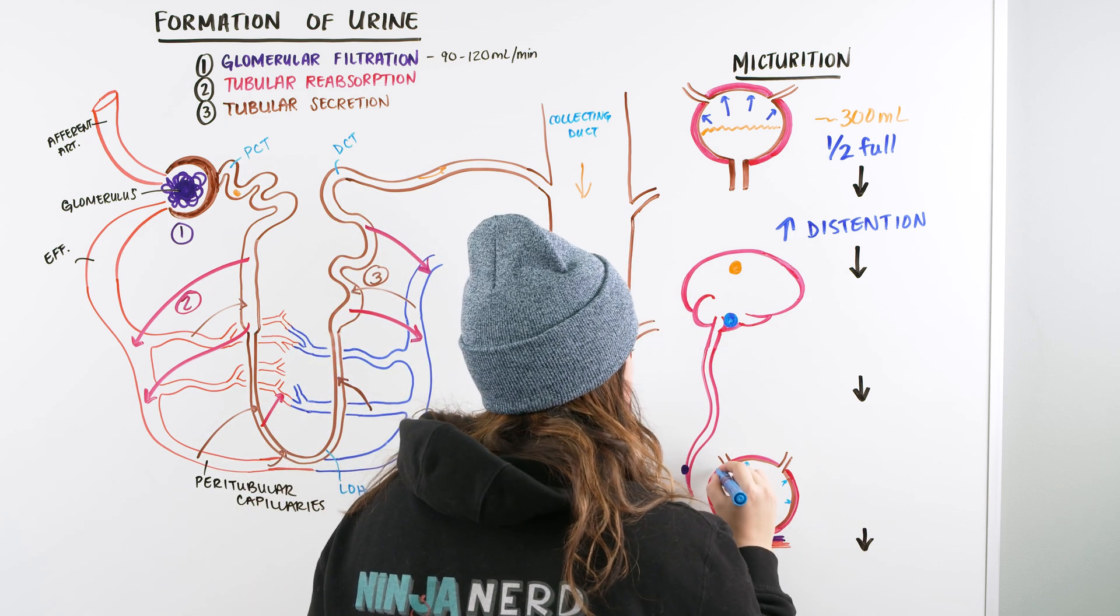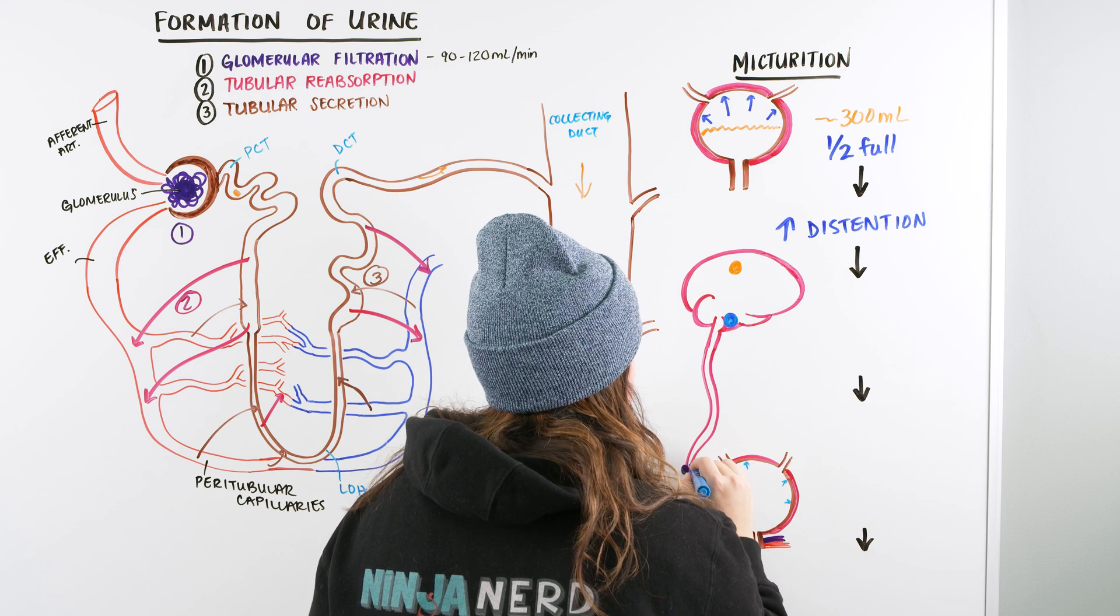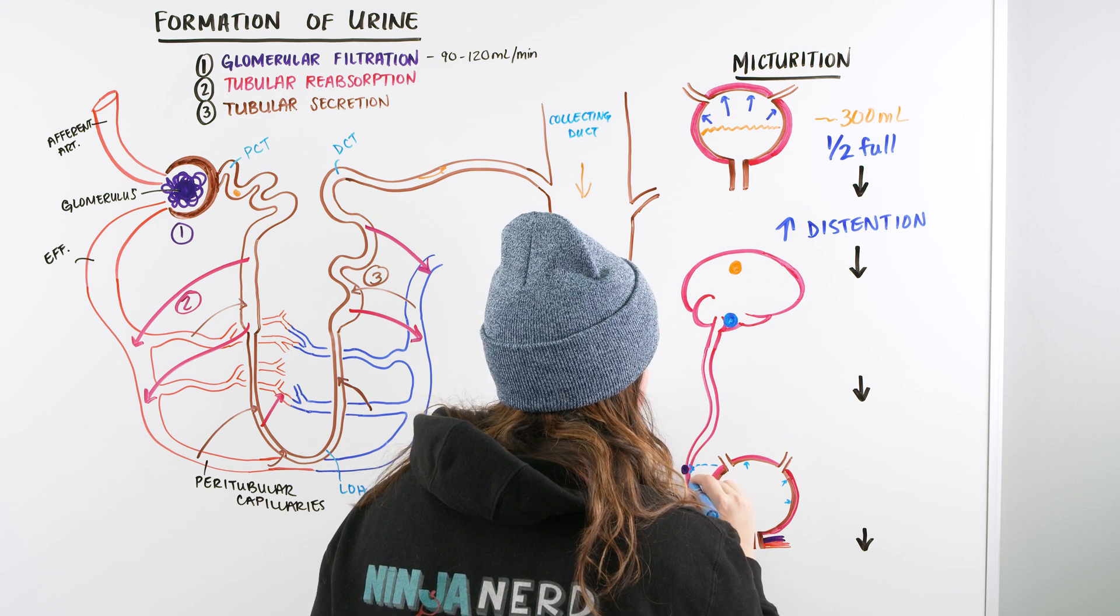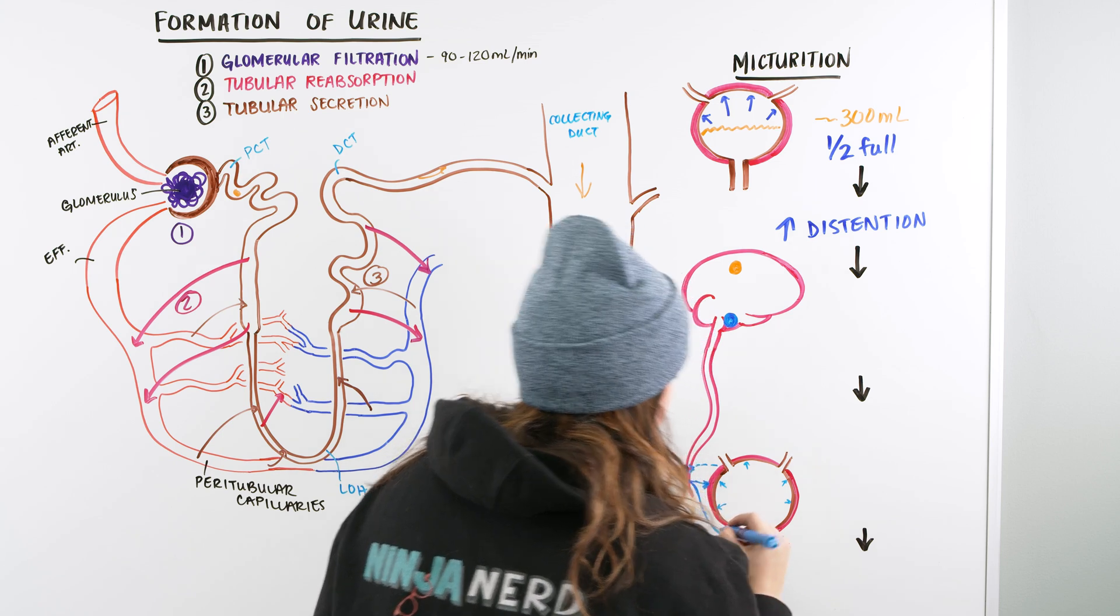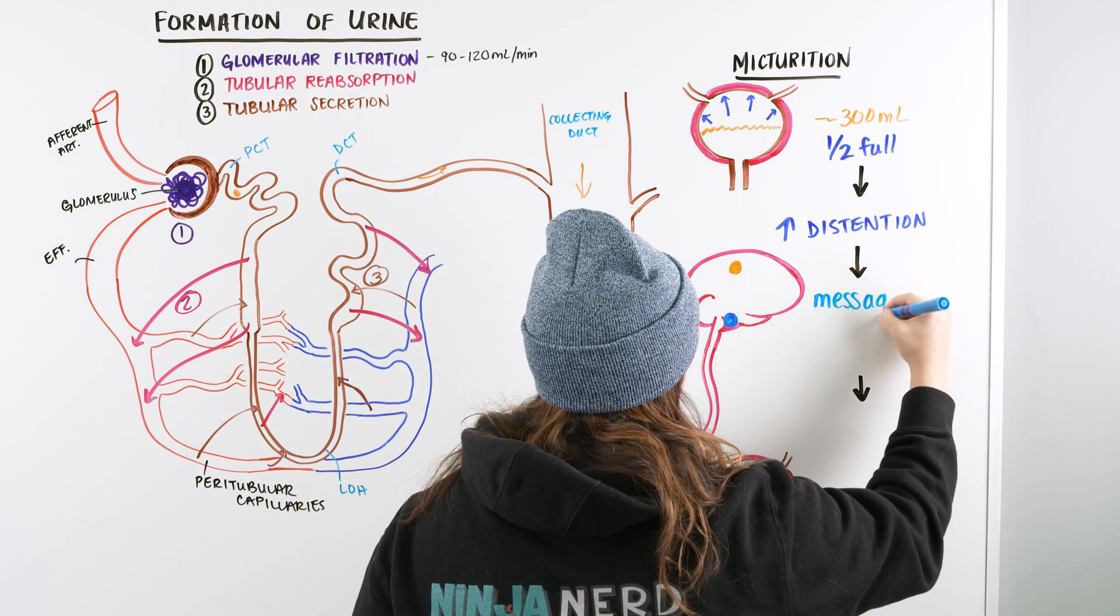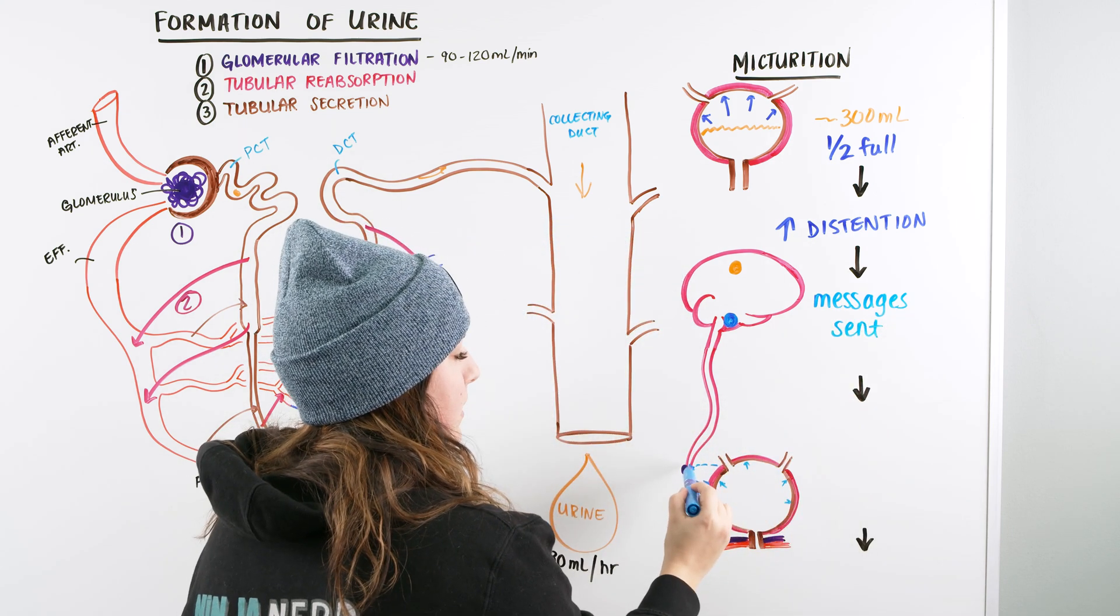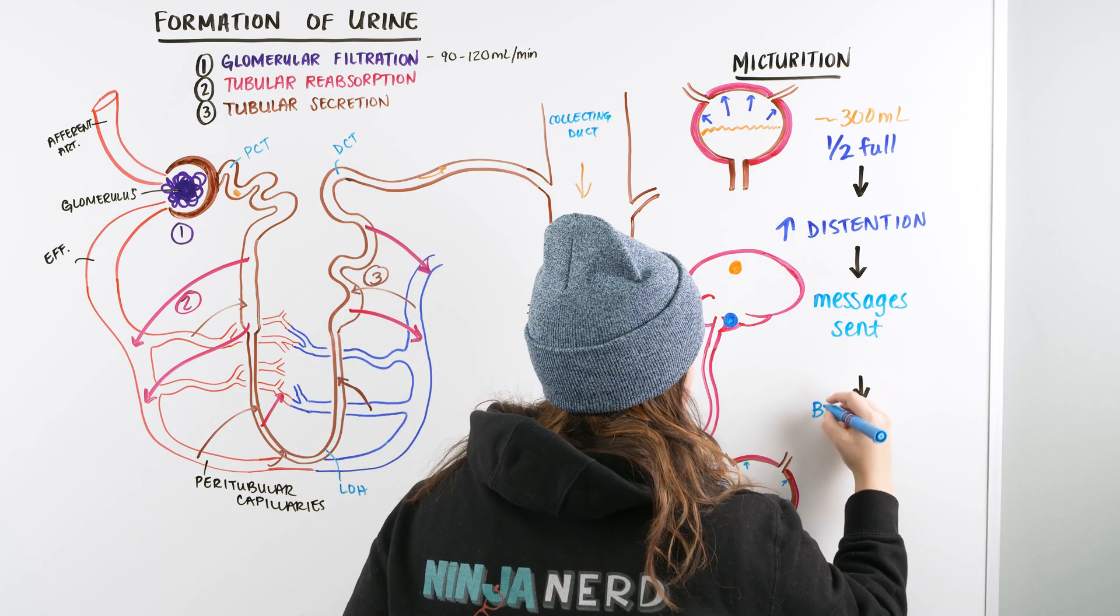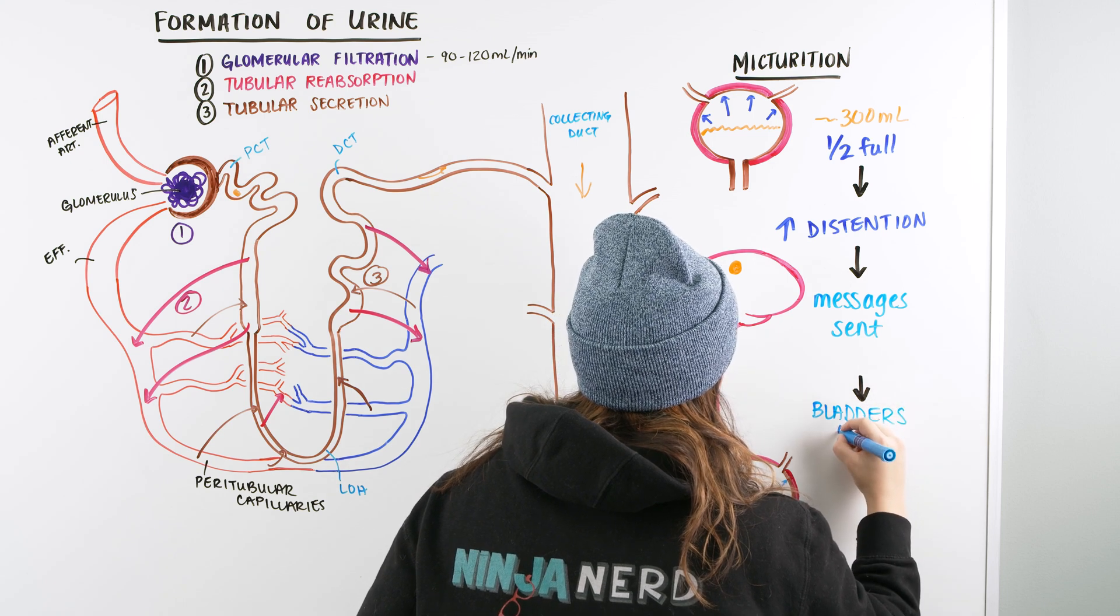Sacral region is able to give another signal to our bladder wall and down into our internal sphincter. So we start to get messages sent. These messages that are sent go right here, and they tell us, all right, our bladder needs to contract. So we start pushing out urine. So our bladder contracts, it's also going to tell us that our internal sphincter here, so our internal urethral sphincter, should relax.